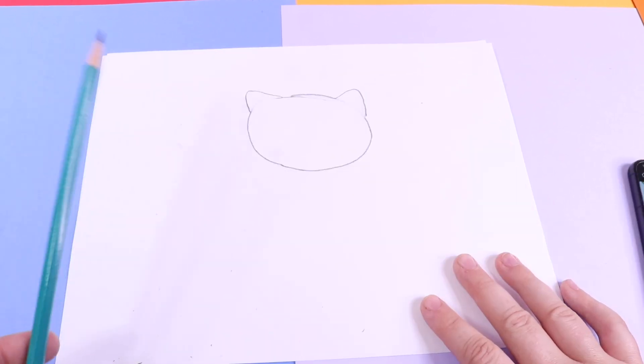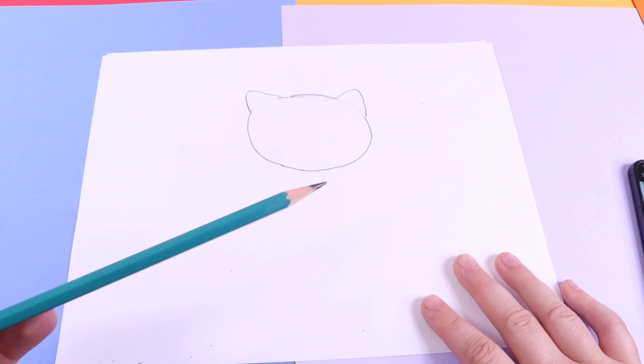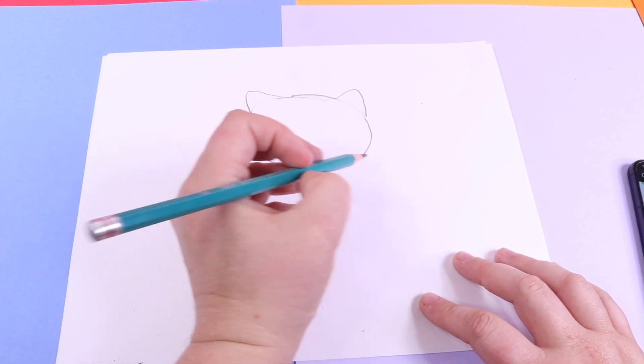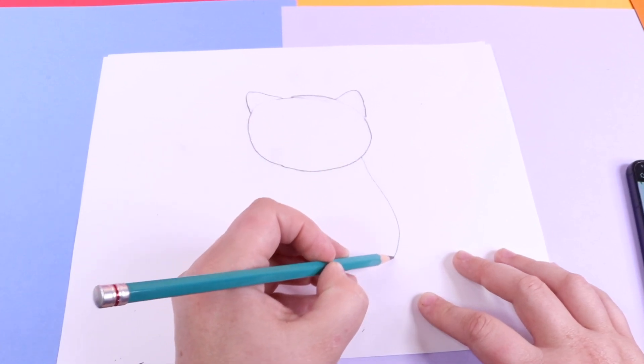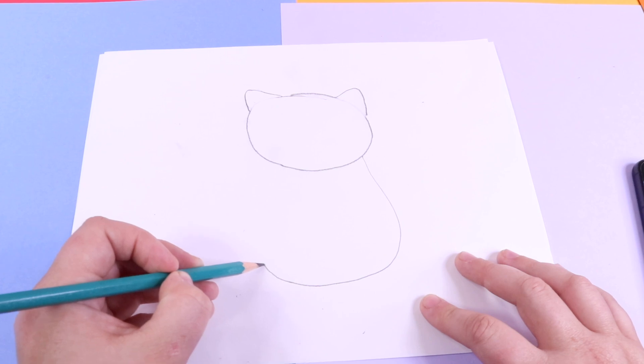I can see this cute little cat coming along, but it needs a body. So let's attach what looks like a pear to the bottom of the kitty cat.